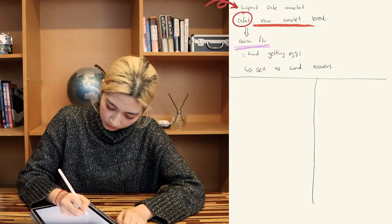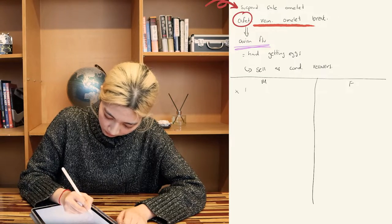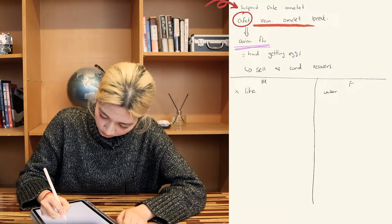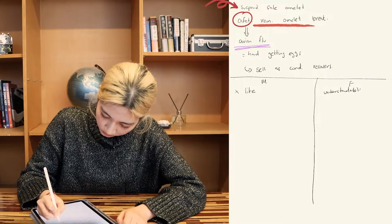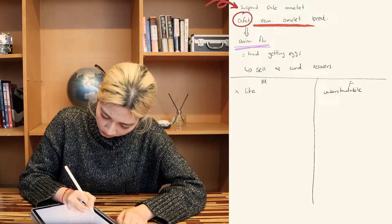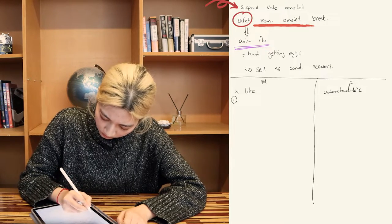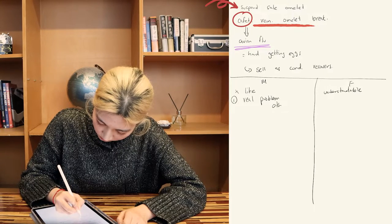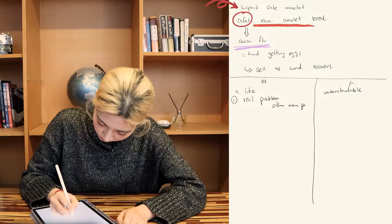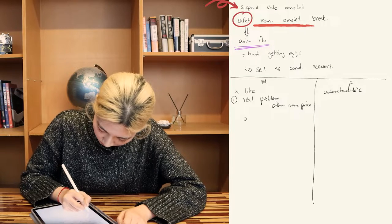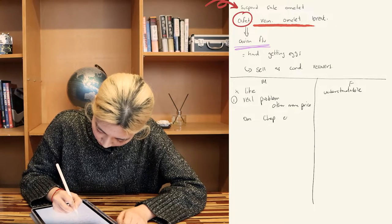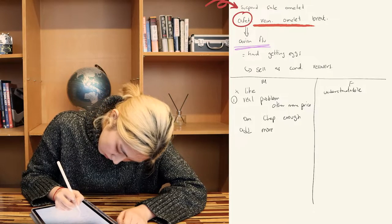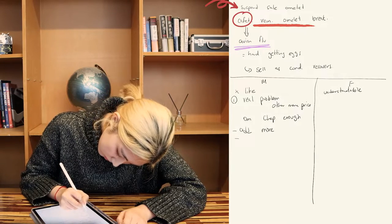Female: I don't like the school's decision. Male: Isn't it understandable? Every restaurant is having hardships getting eggs these days. Female: I get your point, but I think the real problem is the price of other breakfast menu options. The omelet was the only food cheap enough for us to eat in the cafeteria every day. They should have at least added more menu options with similar prices or lowered the price of other breakfast meals.